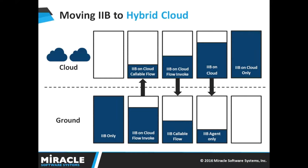Now we look at how we can use IIB on Cloud to achieve hybrid integration. There are five different scenarios. We can have IIB completely on-premise. The second scenario shows users deploying integrations on cloud and calling them securely from on-prem integrations using callable flows — helpful when users want to quickly scale up projects, avoiding the need for more servers. The third scenario shows calling on-prem integrations from the cloud, useful when integrations need to talk with on-prem systems of records like SAP and DB2. The fourth scenario is used where integrations mostly communicate with SaaS-based applications with IIB agents on-prem to talk with private endpoints like MQ and DB2.